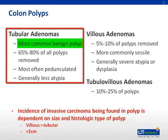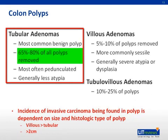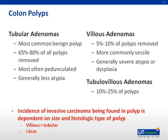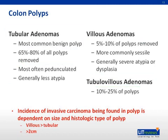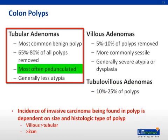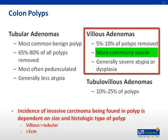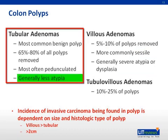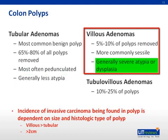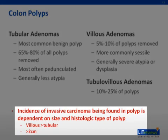The most common benign polyp is the tubular adenoma, consisting of about 65% to 80% of all polyps removed. About 5% to 10% are villous adenomas, and 10% to 25% of polyps are tubulovillous. Tubular adenomas are most often pedunculated. Villous adenomas are more commonly sessile. The degree of cellular atypia is variable across the span of polyps, but there is generally less atypia in tubular adenomas, and severe atypia or dysplasia is found more often in villous adenomas. The incidence of invasive carcinoma being found in a polyp is dependent on the size and histologic type of the polyp, with a higher incidence of invasive carcinoma in villous adenomas and adenomas greater than 2 centimeters.